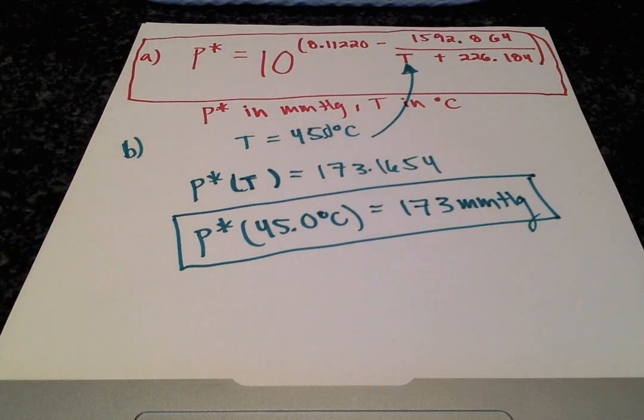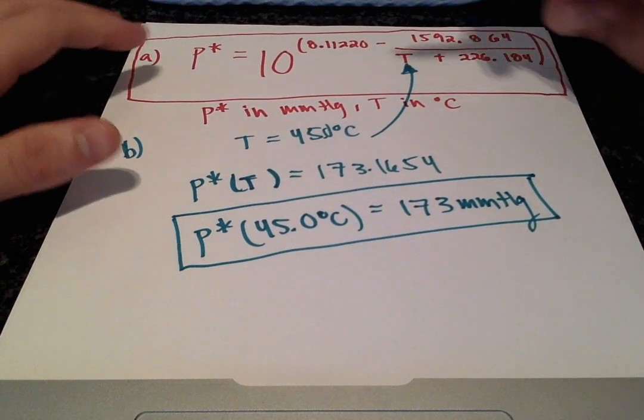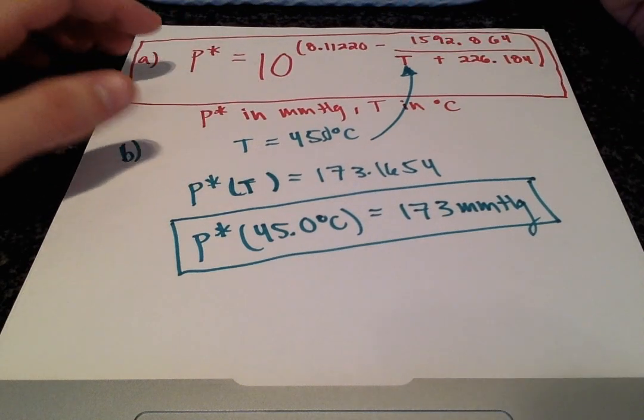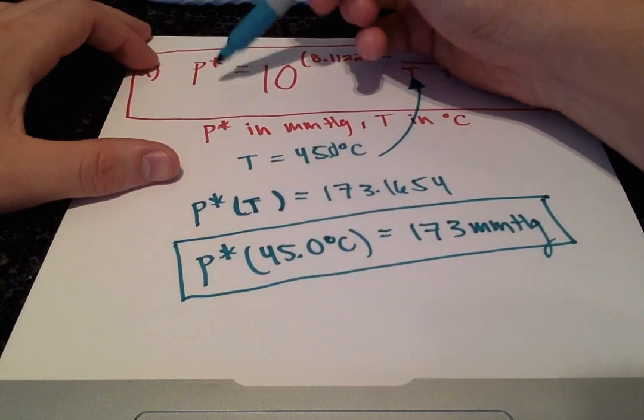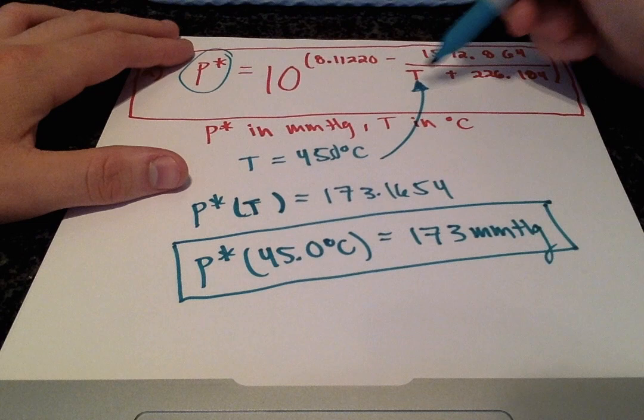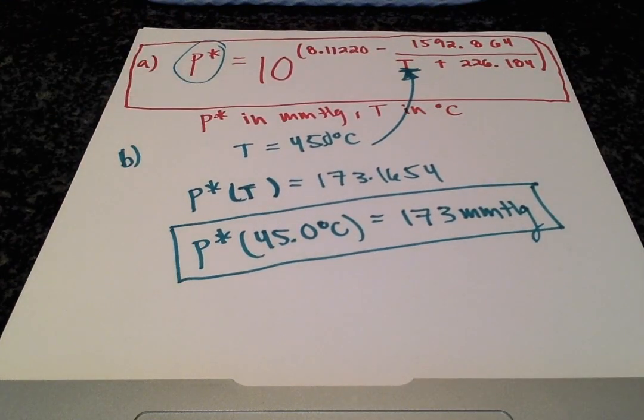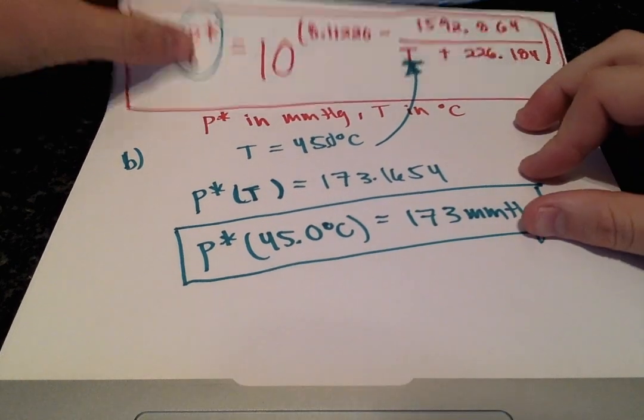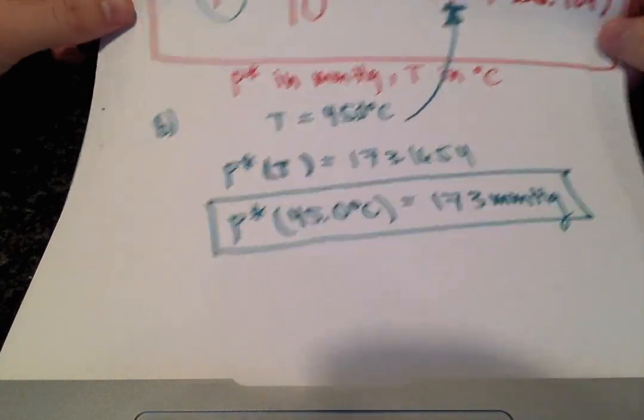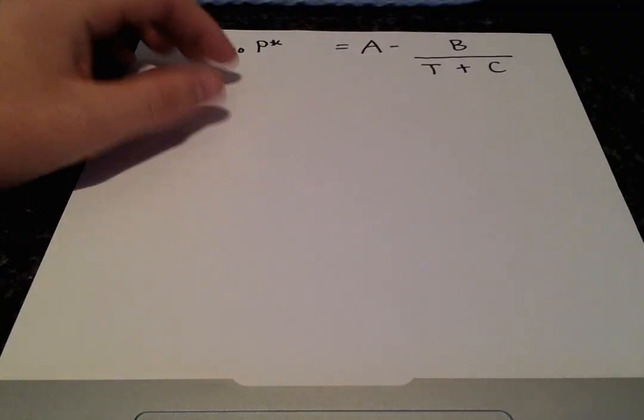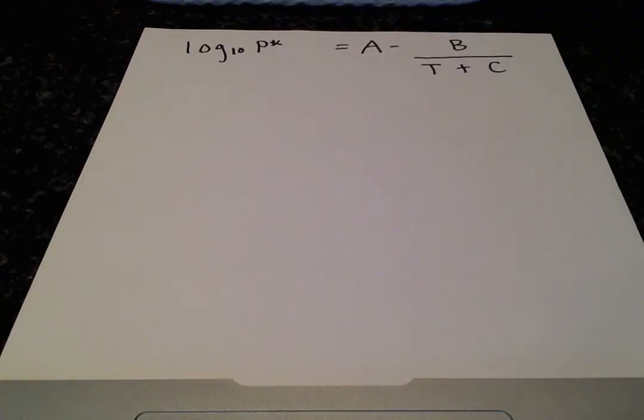And for our final part, part C, we can't use this equation, because they're giving us a vapor pressure, and they want us to get the temperature. So we have to go back to our original equation, and now solve it for temperature in terms of vapor pressure. So I have the equation written here,